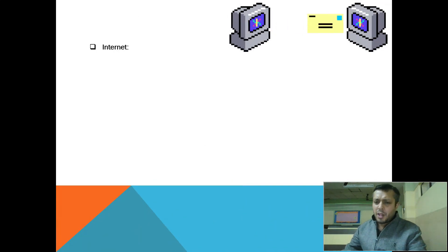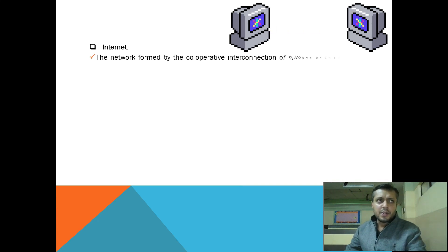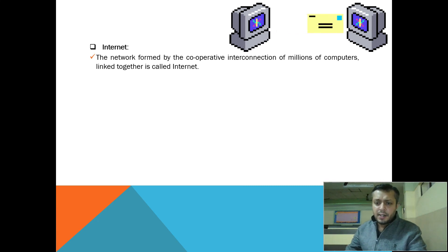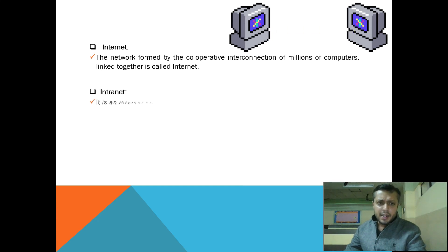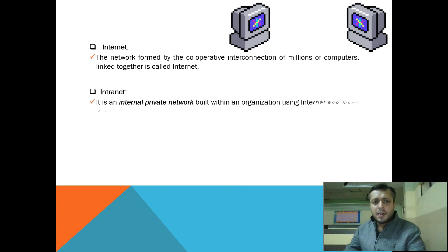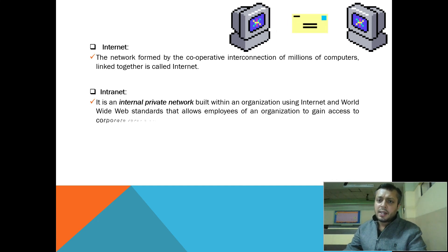Talking about these three terms: internet is basically a network formed by the cooperative interconnection of millions of computers worldwide that are linked together. Intranet, however, is an internal private network which is built within an organization, using the internet and WWW — that is World Wide Web — standards and protocols.